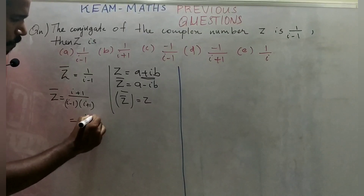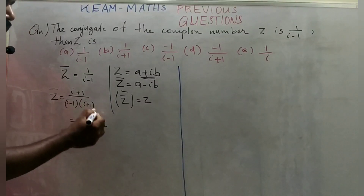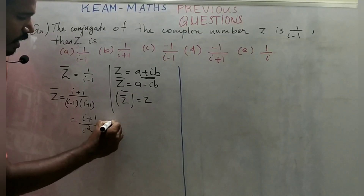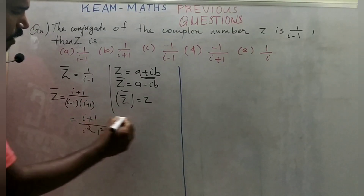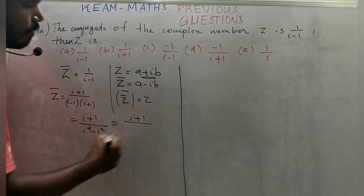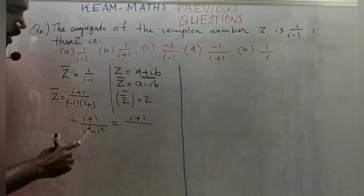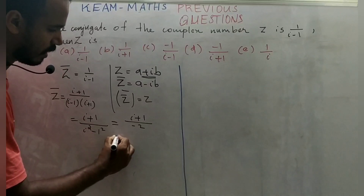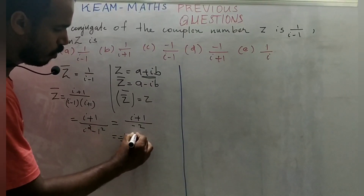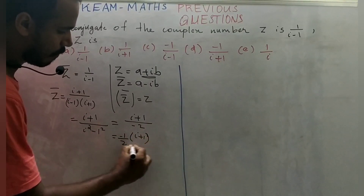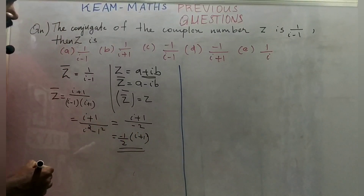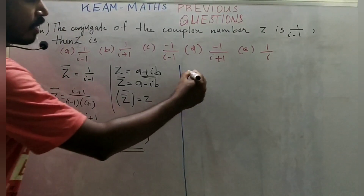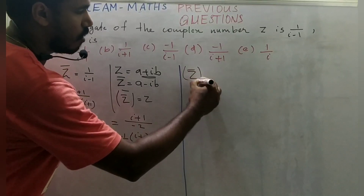Using (a + b)(a - b) = a² - b², the denominator becomes i² - 1² = -1 - 1 = -2. So z̄ = (i + 1)/(-2) = -1/2 · (i + 1). This is the value of z̄.